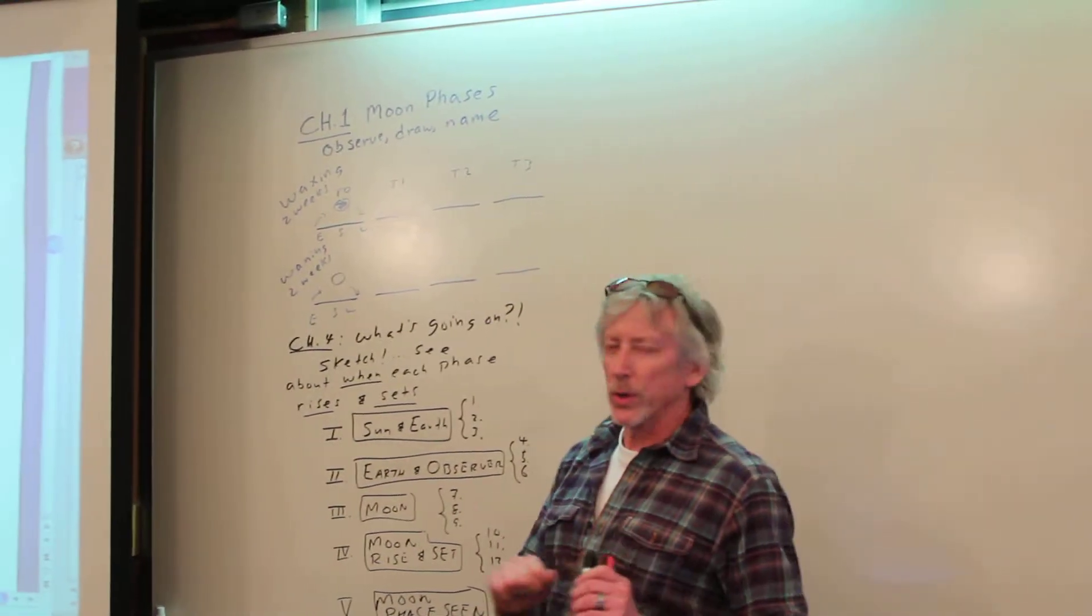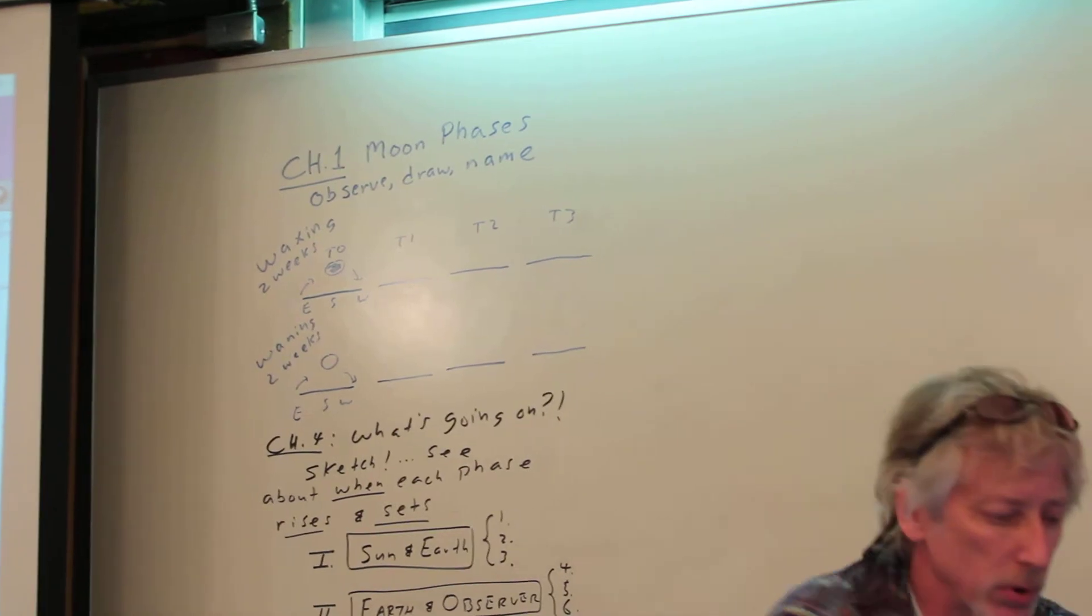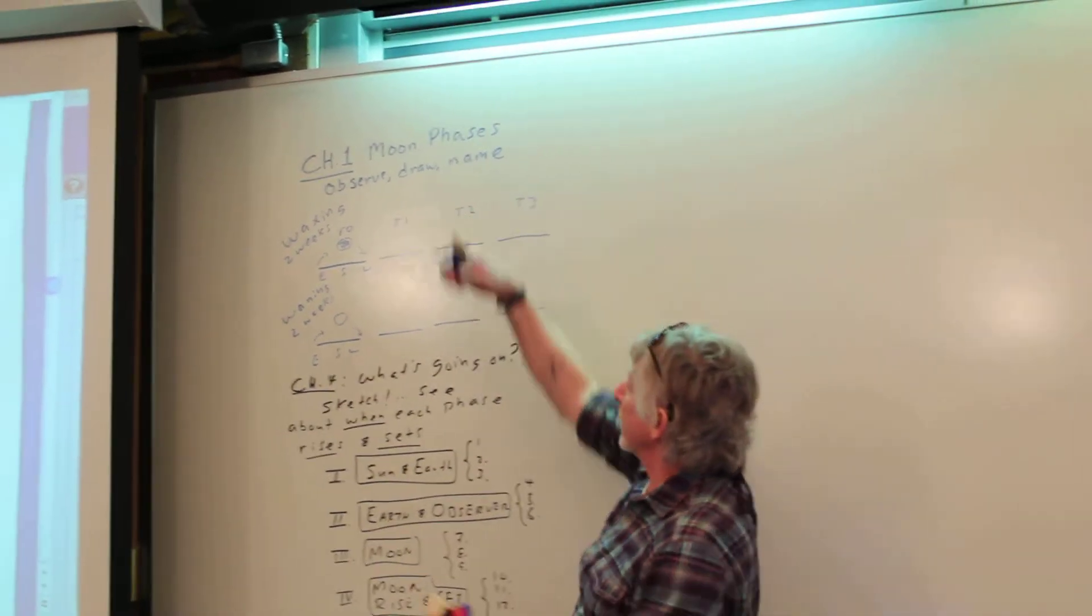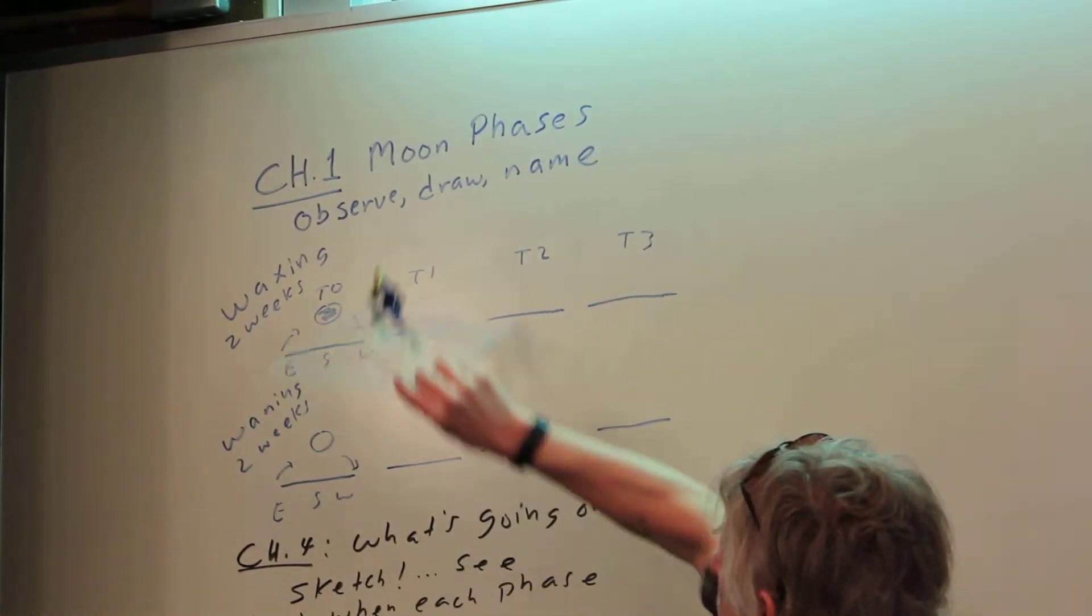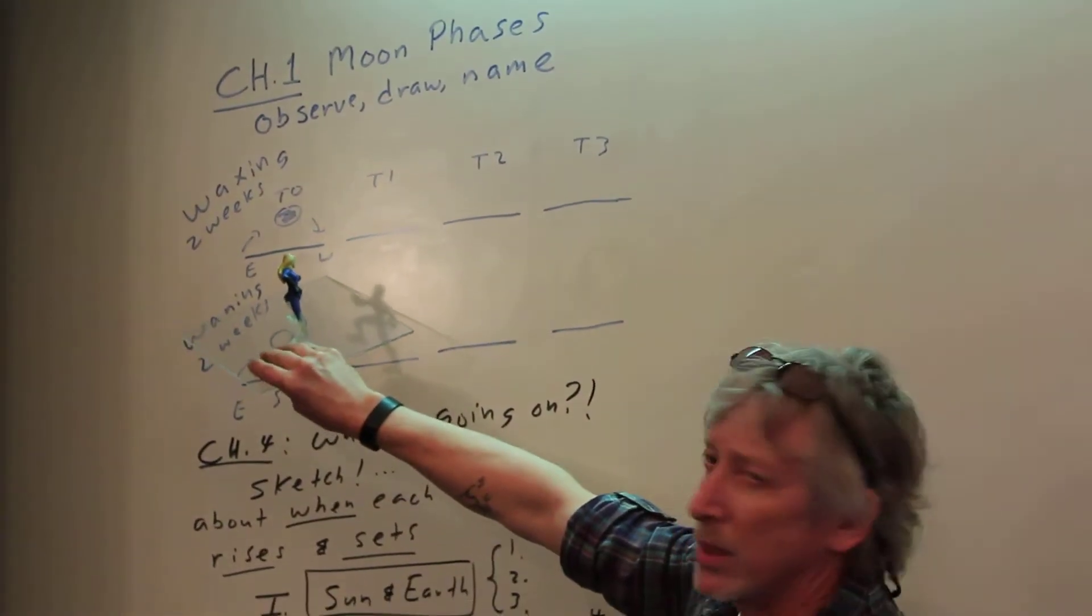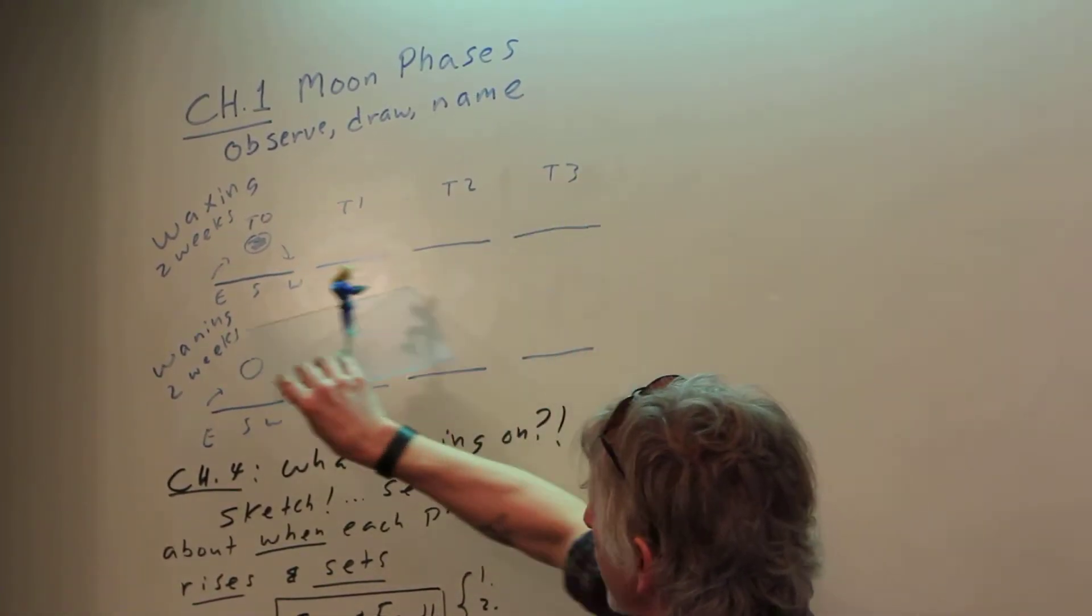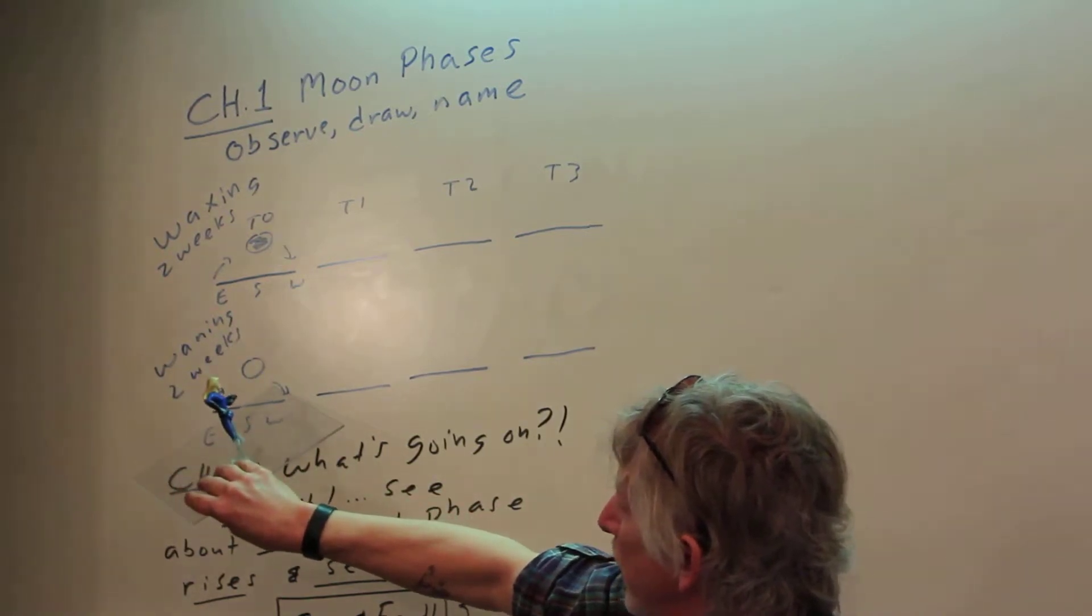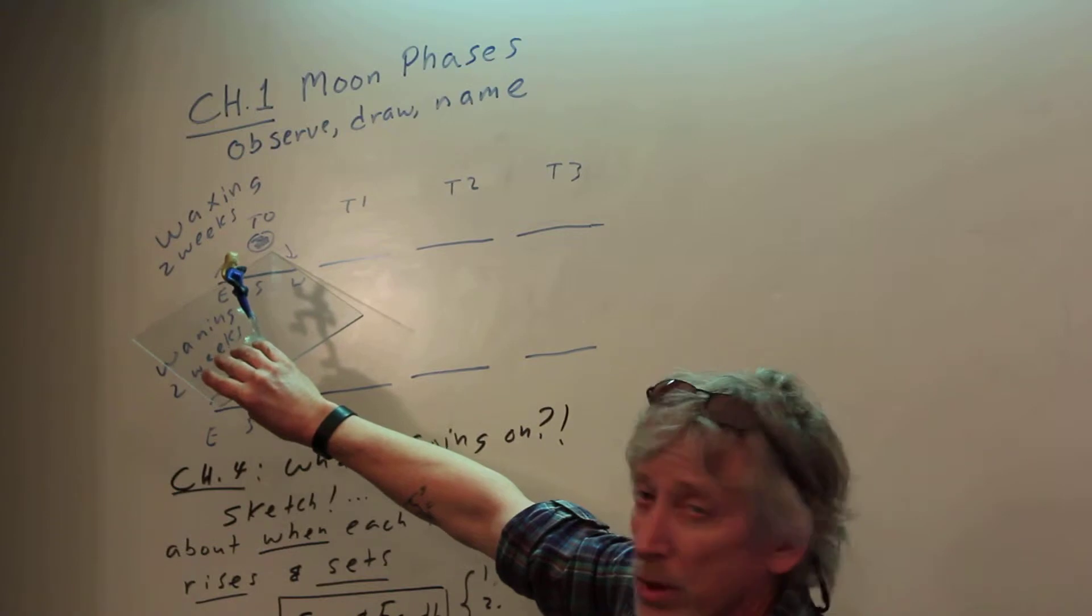And so we're going to tie in our chapter 1 ideas of observing moon phases. We observed, we drew, we named them. We went here and then a few days later we drew Terminator 1, Terminator 2, Terminator 3, then came over here. Terminator 0, 1, 2, 3, here all dark, a new moon.